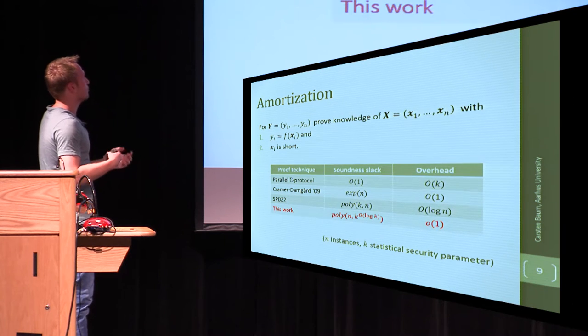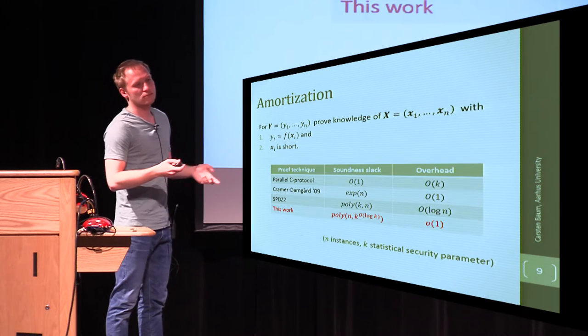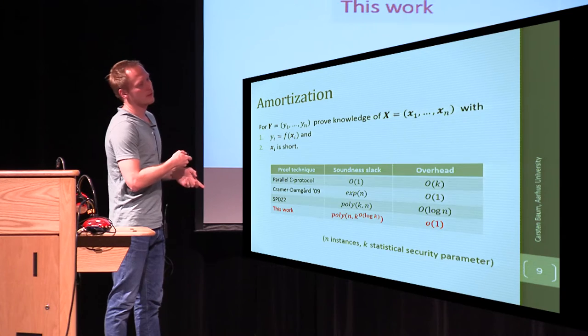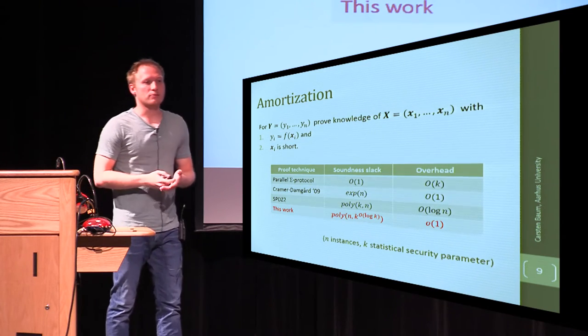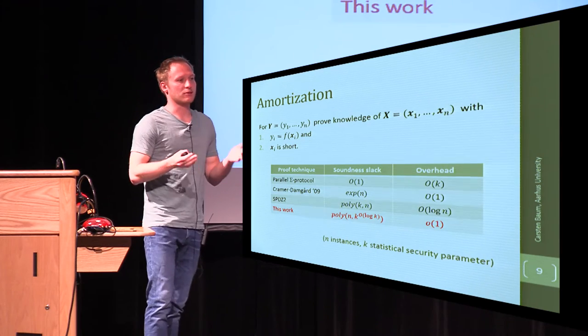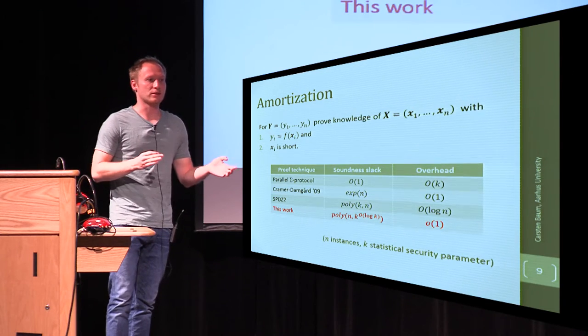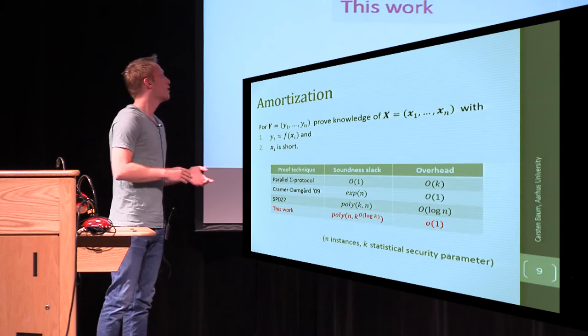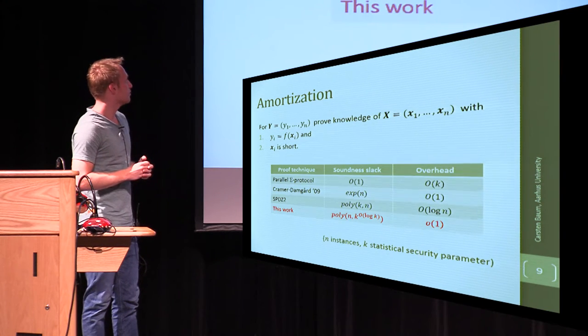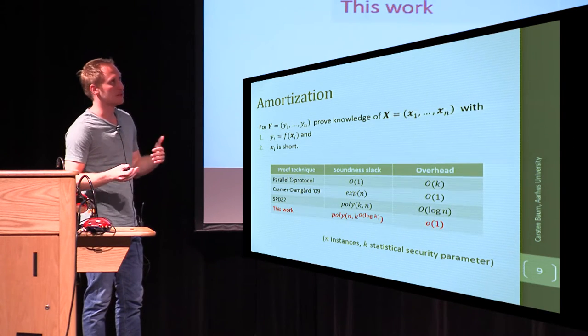And if you just do the naive repetition of sigma protocols, you get k overhead, where k is the statistical security parameter, whereas the soundness slack is very small. In some work by Kramer and Damgaard in 2009, they showed that basically the complete opposite also holds, that you can have a soundness slack that is exponentially far away from what you actually wanted to prove, but on the other hand, that the overhead is very small.